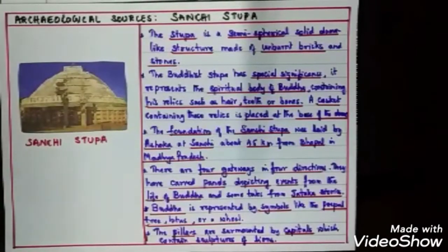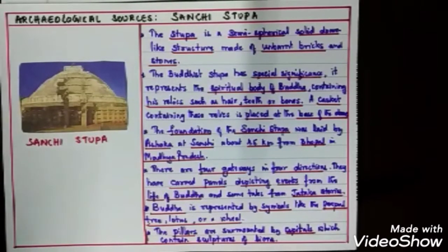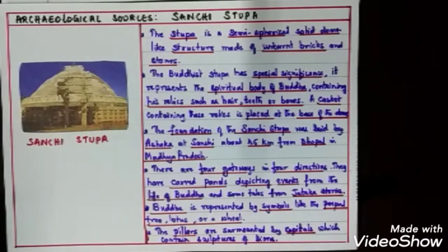The next archaeological source is the Sanchi Stupa. A stupa is a semi-spherical solid dome-like structure made of unbaked bricks and stones. For Buddhists, stupas have special significance — they represent the spiritual body of the Buddha, containing his relics such as hair, teeth, or bones. A casket containing these relics is placed at the base of the dome.